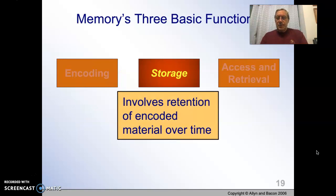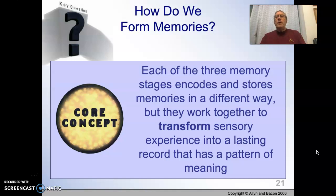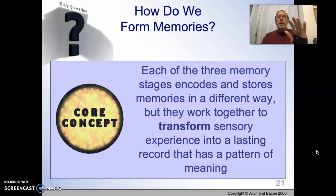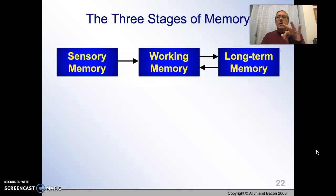When we are encoding memories, we tend to transform our sensory information. We've talked about this in sensation and perception — we transduce sensory information into neural inputs into the brain. We are also transforming sensory experiences as we put them into storage. There are three stages to this: sensory memory, working memory, and long-term memory.